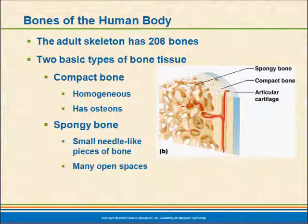The adult skeleton has 206 bones. The fetal or newborn skeleton actually has more than that, but several of these bones fuse over time. Bones have two basic configurations. We have compact bone, which is dense and homogeneous, and has as its structural unit something called an osteon. Spongy bone is surrounded by compact bone — it's on the inside. Within compact bone we have these little needle-like projections called trabeculae, and there's lots of open space in which red bone marrow can form.